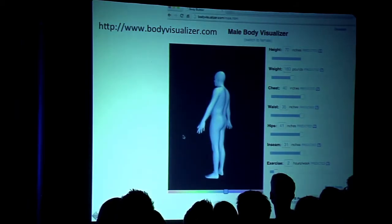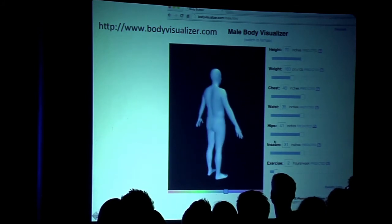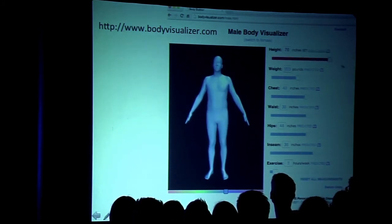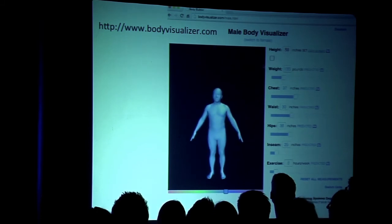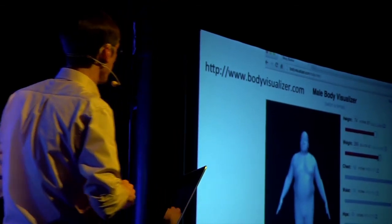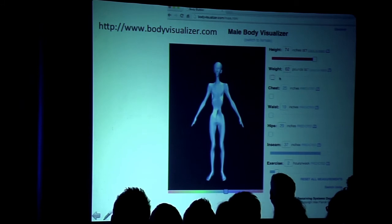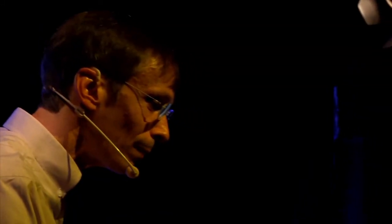Now, if you want to play with this, we have a bodyvisualizer.com website. You can load male and female models. You can have it in metric units. You can play with the body shapes, but this is a way of exploring the population. And here you can change the height and weight. You can create some sort of crazy shapes also, if you like.